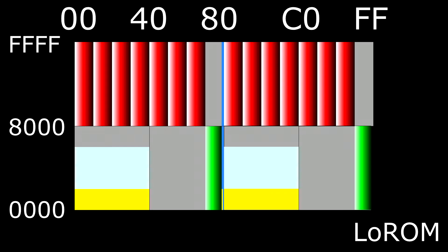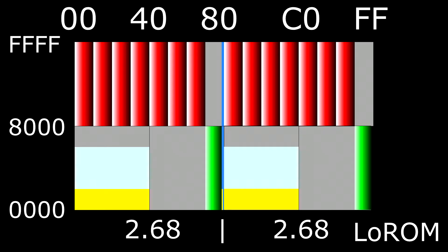Banks $80 to $FD mirror banks $00 to $7D — 100% the same — only if you have fast ROM and you have the wait bit set. When you are in a bank greater than $80 you will read and access data at 3.58 MHz, and when you are below $80 you will access at 2.68 MHz. If you don't have the bit enabled, then above $80 will be 100% the same at 2.68 MHz. This seems like a large waste, but it's for convenience and compatibility between Low and High ROM maps — you can set the data bank to a bank that has your code and the registers.